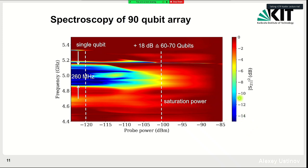The experiment shows indeed a band gap at about 5 GHz — the blue region where transmission is very low and waves are reflected from the array. The signature of two-level behavior is saturation at a particular power. Looking at individual qubits off-frequency from the large array, saturation occurred around -120 dBm, whereas for the full array the saturation power was about 18 to 20 dB higher, from which we estimated that about 60 to 70 qubits participate in the band gap.